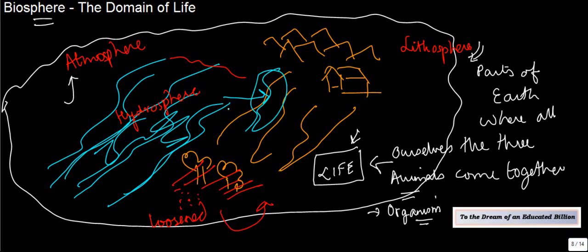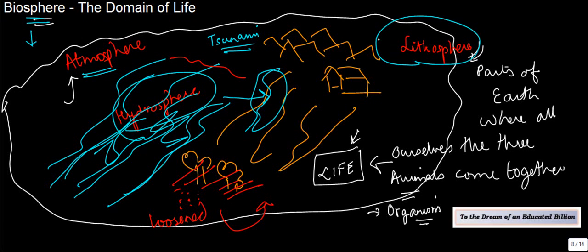For example, when the tsunami came, part of land actually got submerged into water. So changes in either of these three can actually bring about changes in the entire biosphere. To be very simple, biosphere is a combination of atmosphere, hydrosphere, and lithosphere which makes life possible.